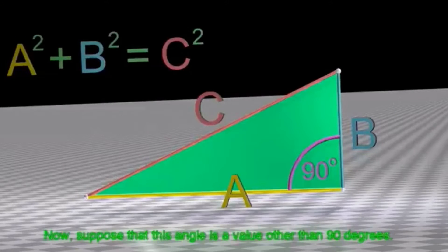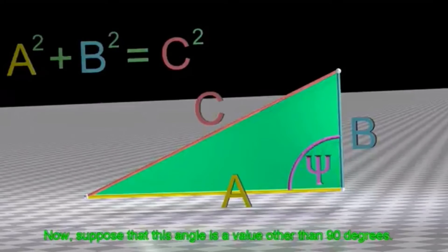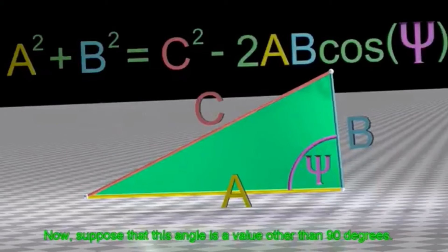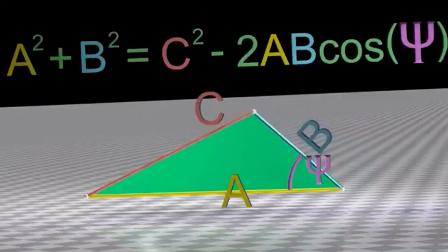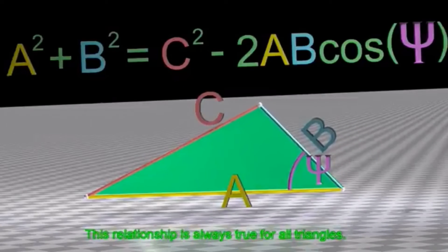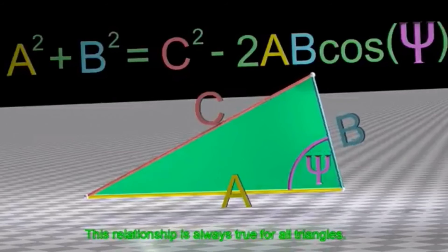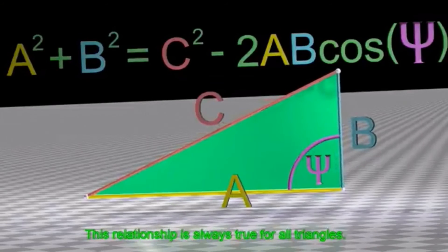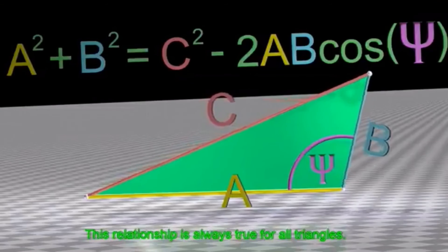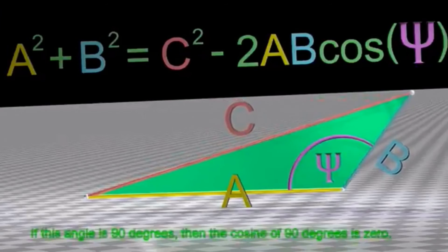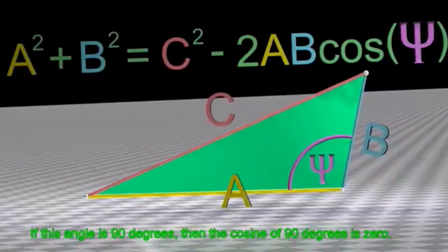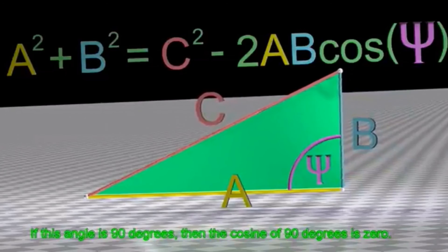Now, suppose that this angle is a value other than 90 degrees. This relationship is always true for all triangles. If this angle is 90 degrees, then the cosine of 90 degrees is zero.